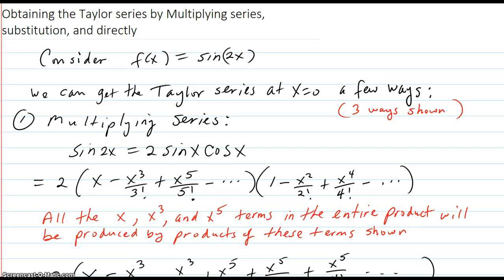Obtaining the Taylor series for a function by multiplying two series together, substitution, and doing it directly. Consider f(x) = sin(2x). We can get the Taylor series at x = 0 a few ways. Three ways are shown here.